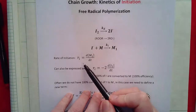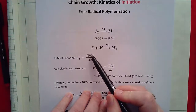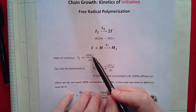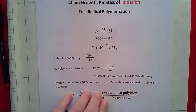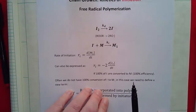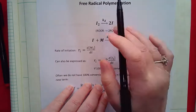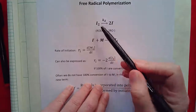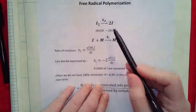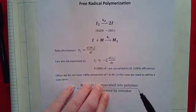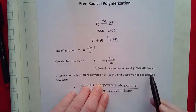So our rate of initiation — how can we define it? We can define it by the increase of one repeat unit with an active site, M1 with the active site (see the dot). This is an increasing species, not decreasing with time, so we don't need a negative sign. The other way we could express it is how the initiator decreases with time. We can express our rate of initiation as minus two — because it's producing two radical species — times the rate of decrease of the initiator species. This assumes one hundred percent efficiency: every time one initiator radical is formed, one chain is initiated.